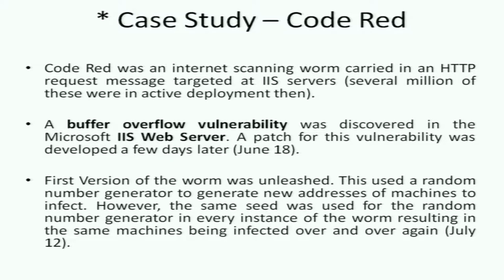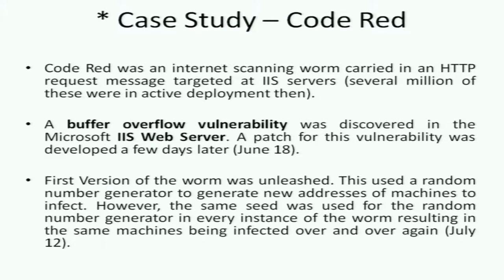The first version of the worm used a random number generator to generate new IP addresses of machines to infect. The worm had to be lucky — hoping that the randomly generated address also ran an unpatched IIS web server. However, the same seed was used for the random number generator in every instance of the worm, resulting in the same machines being infected again and again, starting on July 12th.